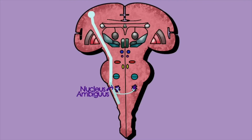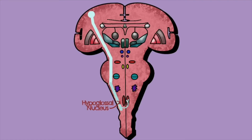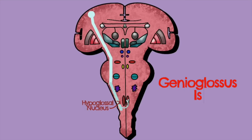Journeying further down into the medulla, we find the hypoglossal nucleus, shown with a single contralateral innervation. Textbooks often refer to the hypoglossal nucleus as being bilaterally innervated for most tongue muscles, except for one — the genioglossus, which is responsible for sticking the tongue out. That muscle is often tested in the clinical exam for the hypoglossal nerve. The contralateral innervation on this diagram represents that contralateral input to the genioglossus specifically.